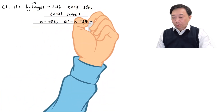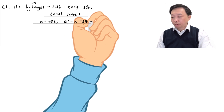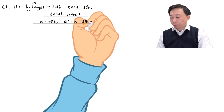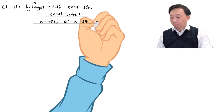The estimated coefficient on siblings is minus 0.028, meaning that one more sibling is associated with a 2.8% wage decrease. The relationship is statistically significant at the 1% level.